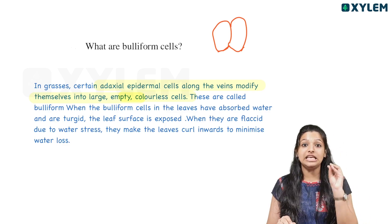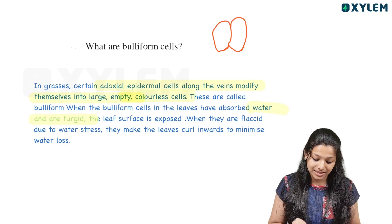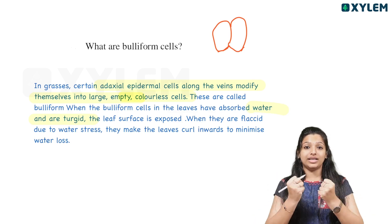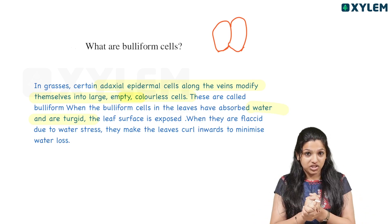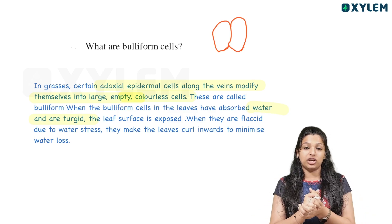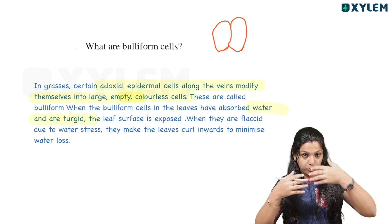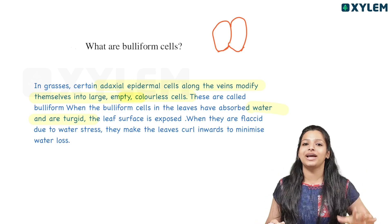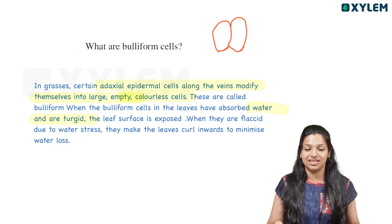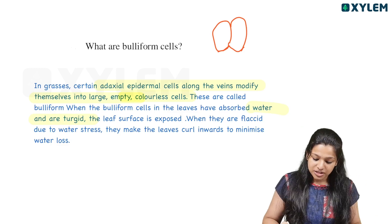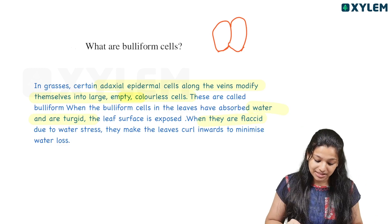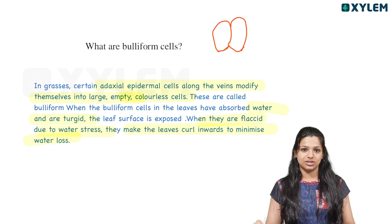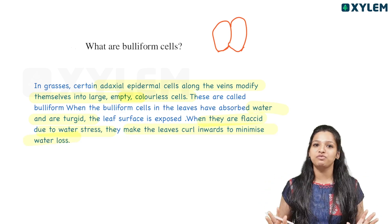When bulliform cells in the leaves have absorbed water, they are turgid. When they are flaccid due to water stress, they make the leaves curl inward to minimize water loss. That is the function of bulliform cells.